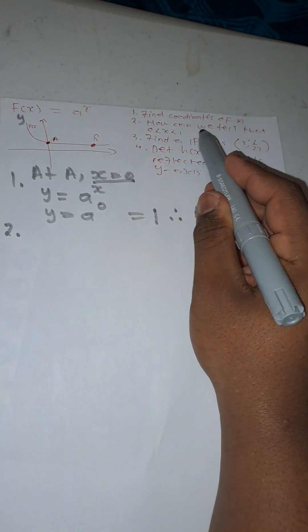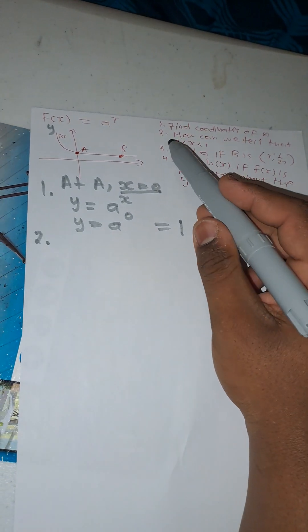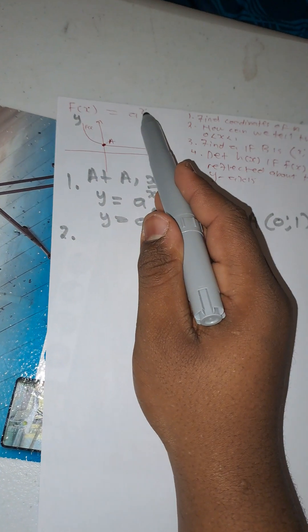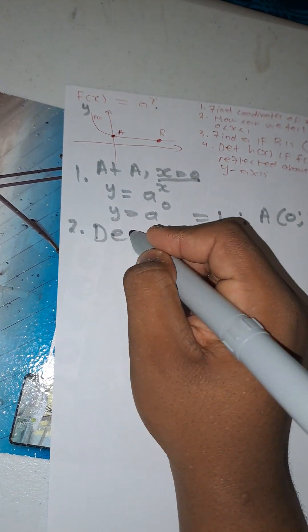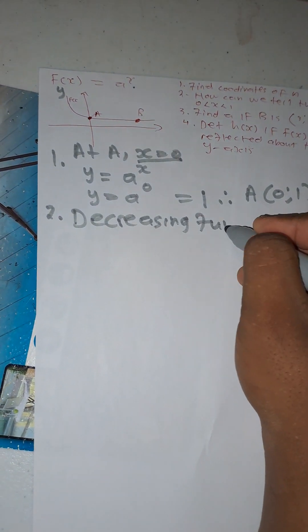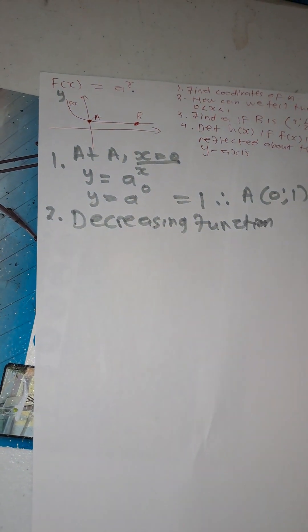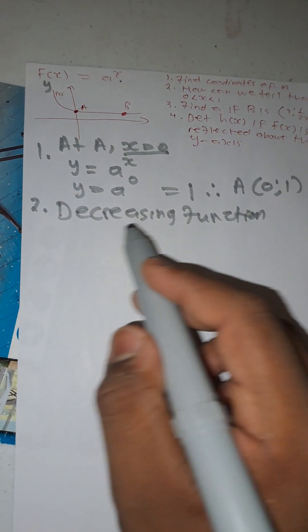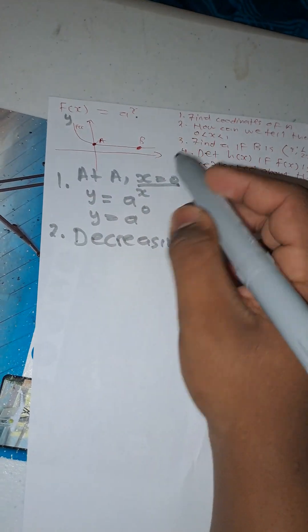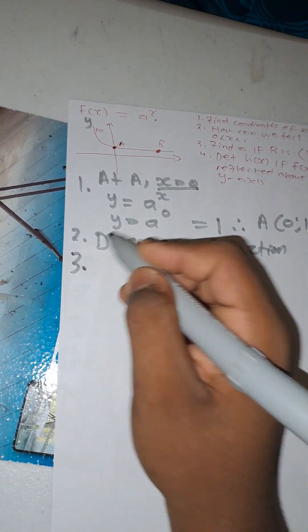Number two: how can you tell the value of b is between zero and one? Because the graph is a decreasing function. A decreasing function means b is between zero and one, while an increasing function means b is greater than one.